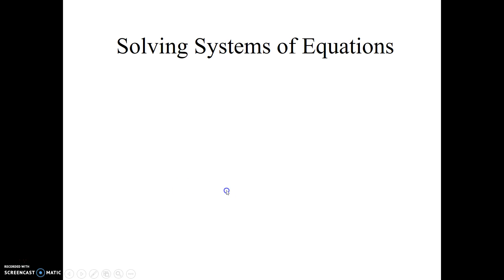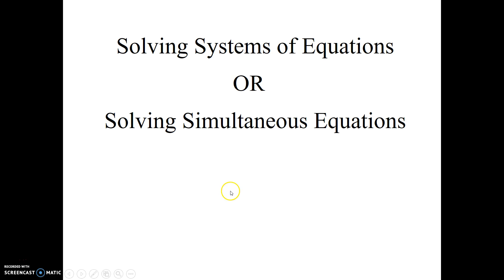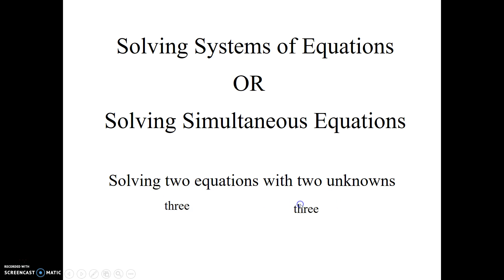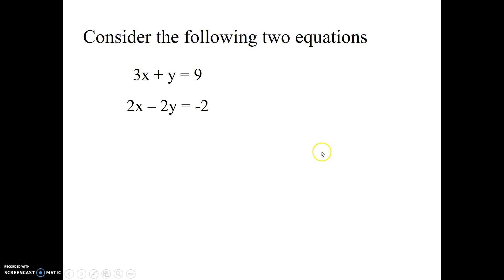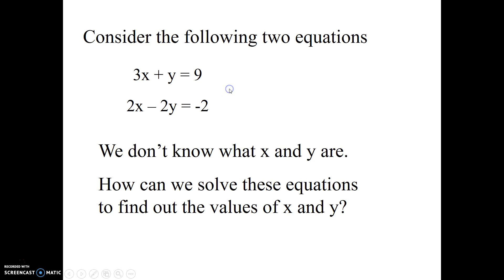This is a video about solving systems of equations, otherwise known as simultaneous equations. This is where you have two equations with two unknowns — sometimes three equations with three unknowns, or four with four. We're going to stick with two and two. The idea is you have two equations with two unknowns, x and y, and you want to find what values of x and y satisfy both equations.